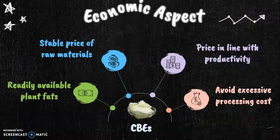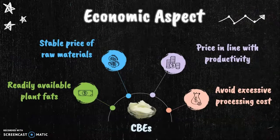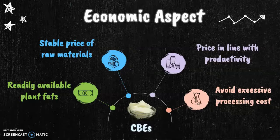In terms of the economic aspect, plant fats such as palm oils are readily available and have a more stable price than cocoa beans. In addition, the price of the alternative fats is more in line with productivity. The stable quality of the alternative fats can be achieved by adjustable enzymatic interesterification, which further avoids excessive processing cost.